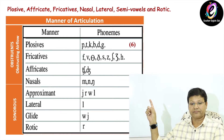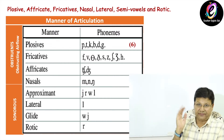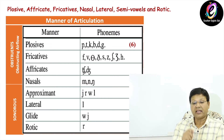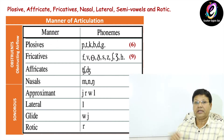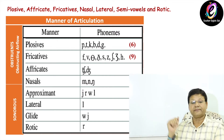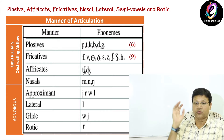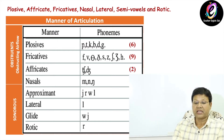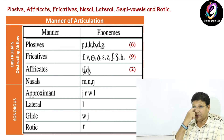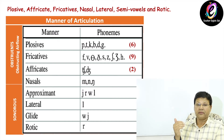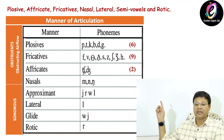Second, fricatives: fa, va, tha, tha, sa, za, sha, ja, and ha — nine fricative sounds. Then affricates — two: cha and ja. Then nasal sounds — three: ma, na, and ng. Then approximates — four sounds: ya, ra, wa, la.